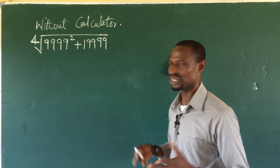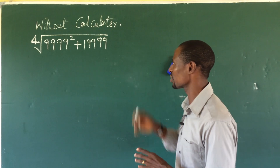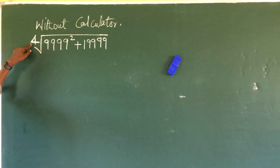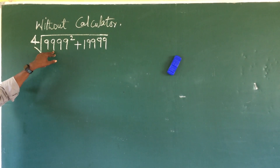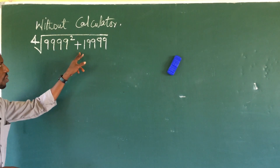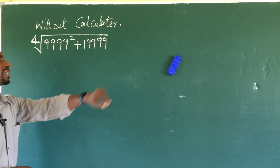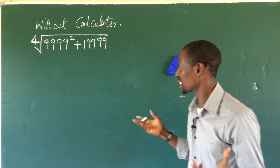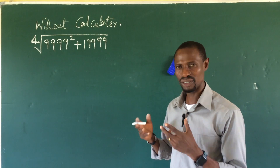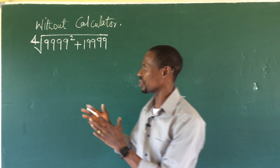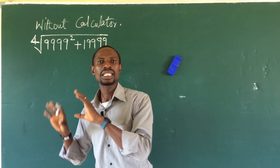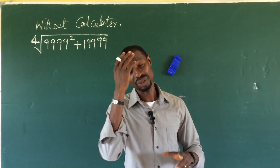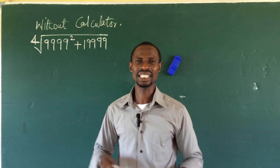The question is kind of simple but without the use of a calculator — how do you solve this? Without a calculator, evaluate the fourth root of 9999 squared plus 1999. How do you evaluate this without a calculator? It's very simple. We're going to make use of some mathematical manipulation here to enable us to solve this. Whenever you see similar questions, you should approach it using the same approach and you'll get your answer in no distant time.